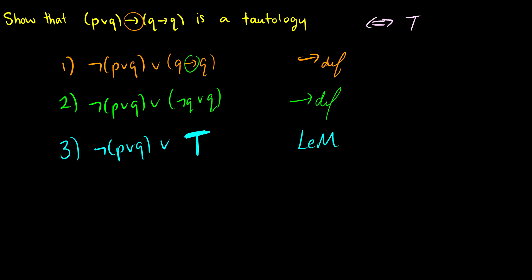And then for step 4 here, if we have something OR true, remember, it's always going to take the upper value with the OR. And true is always true. Therefore, the final statement is true. So we have proven that (P or Q) arrow Q arrow Q is a tautology.